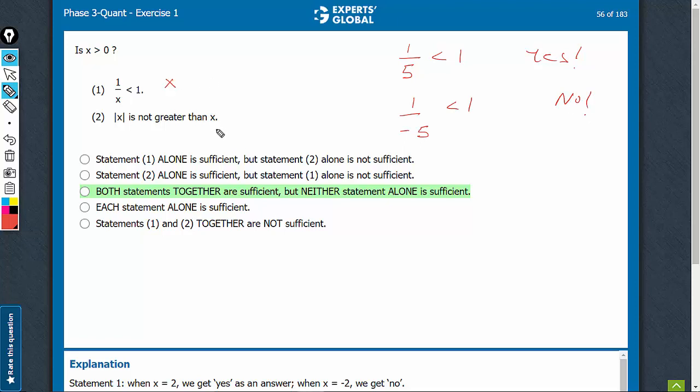Statement 2 alone, while some students may think that this is going to be sufficient, it is not because it has an exception of x being equal to 0. Imagine, mod of 0 is not greater than 0. The question is, is x greater than 0? For this value, the answer will be no.